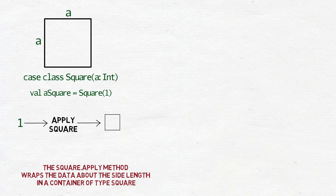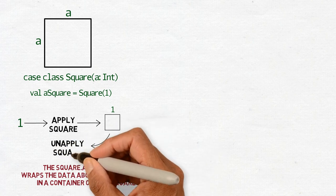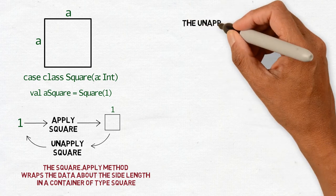If someone told you only that the length of the side is one, you would have the data but you would still have to ask the side of what. Having the additional information that we talk about a square completes the picture. The unapply method works the other way.